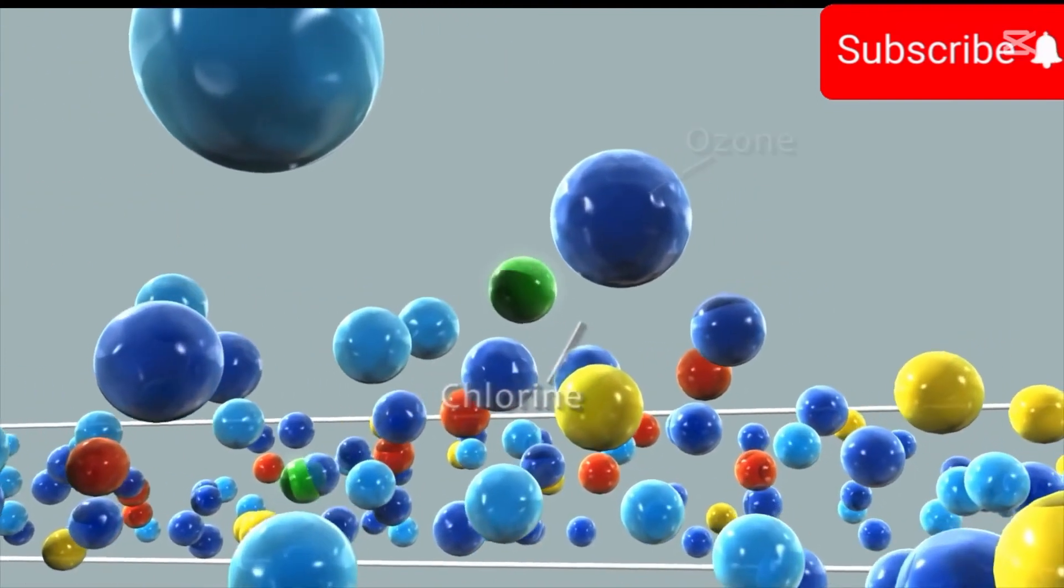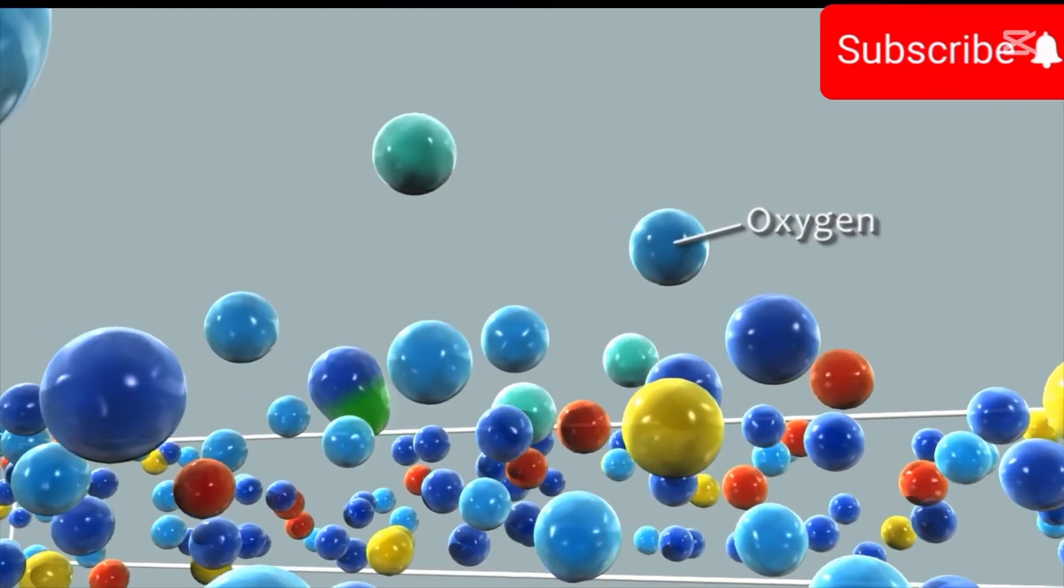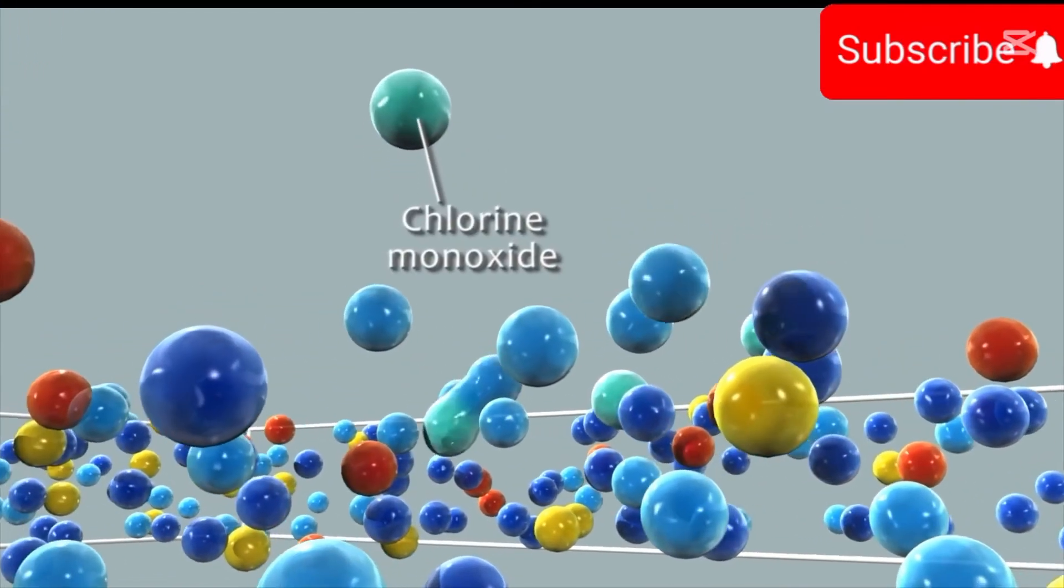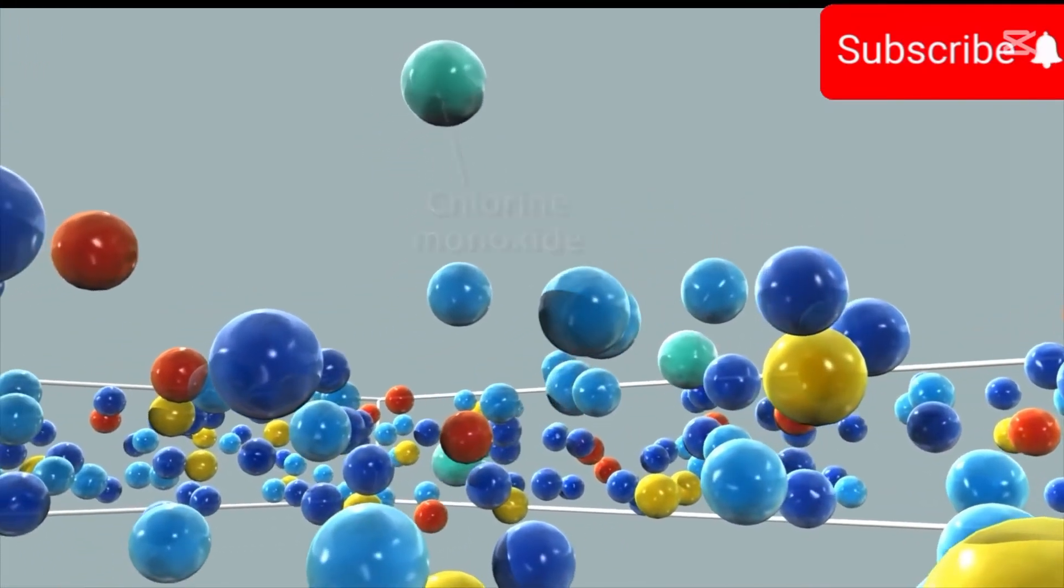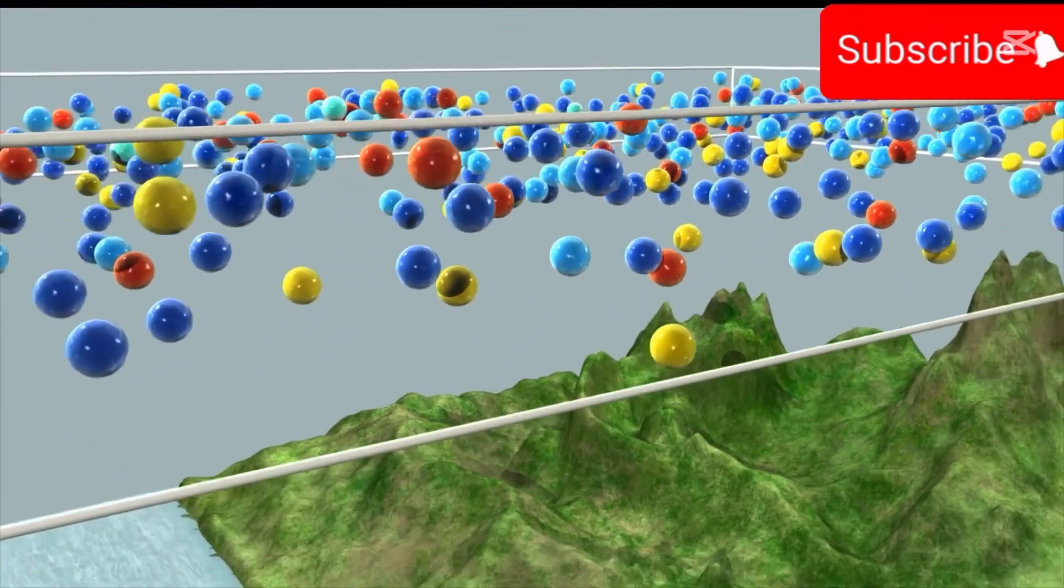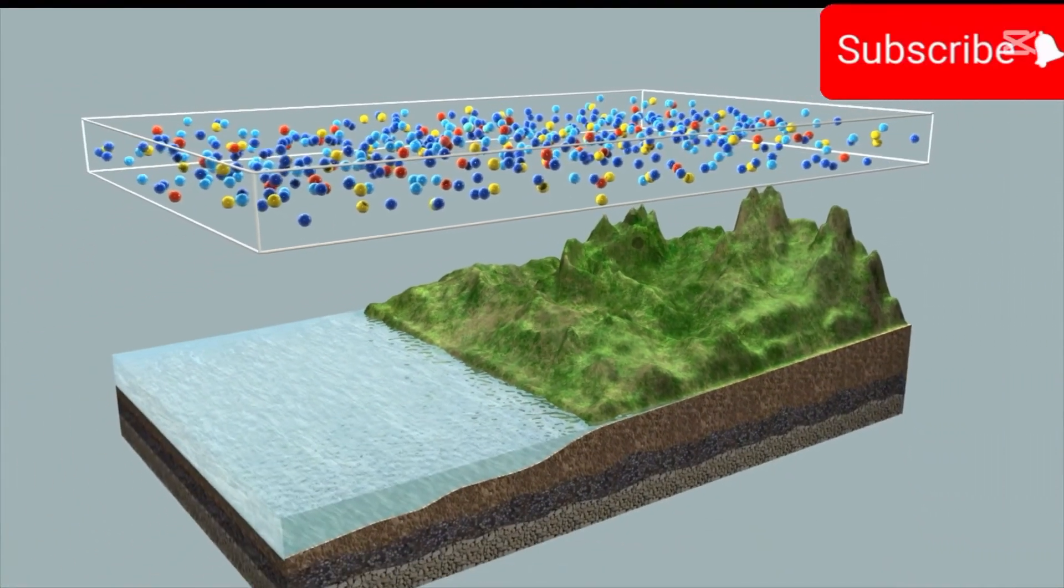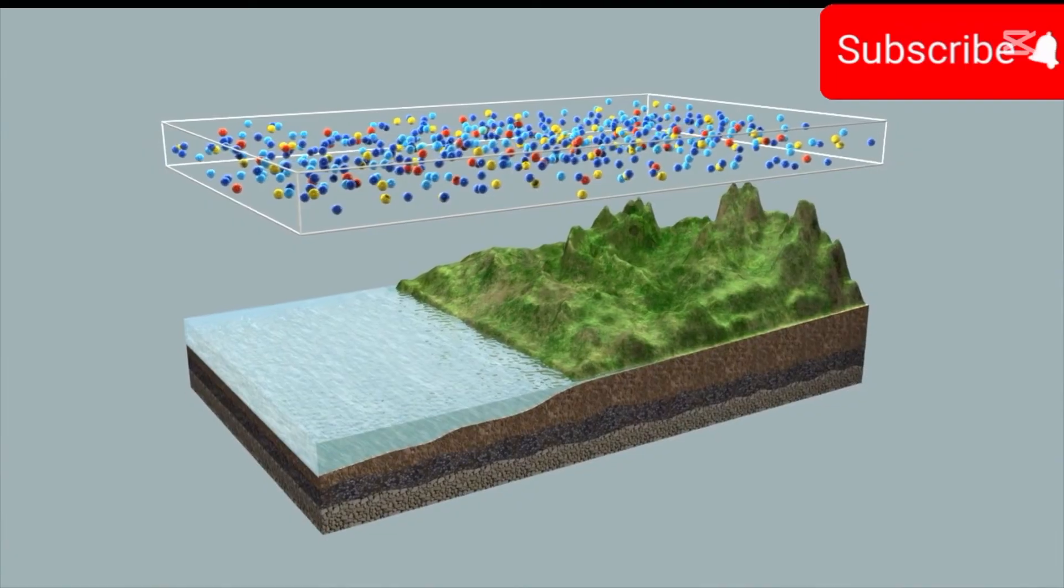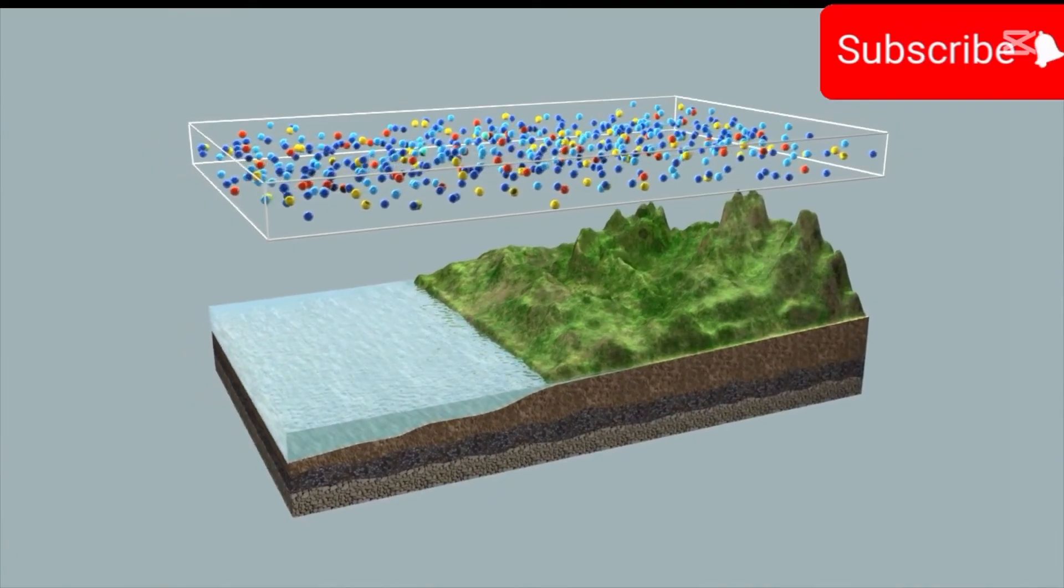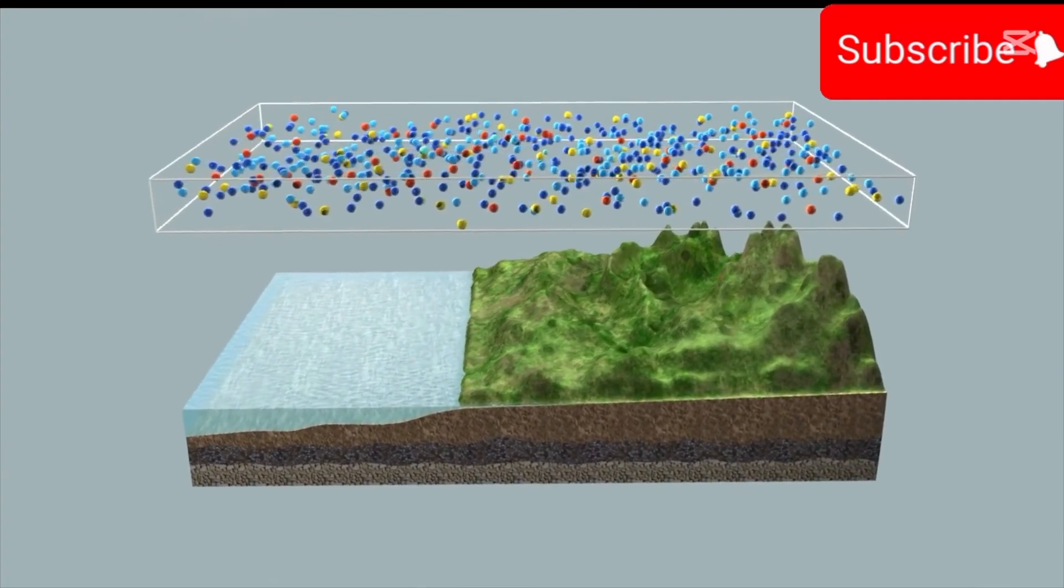The chlorine atoms react with ozone to form oxygen and chlorine monoxide, resulting in the reduction of the ozone layer. Thus, use of CFCs and HCFCs needs to be reduced to save the ozone layer.